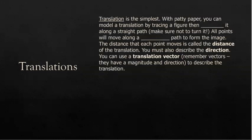A translation is our simplest transformation. With patty paper, we could model a translation by tracing a figure and then sliding it along a straight path — make sure that when you slide it, you are not turning it at all. All points will move along a parallel path to form the image, with multiple parallel paths forming the image. The distance that each point moves is called the distance of the translation. We must also describe the direction of the translation using a translation vector — they have magnitude and direction.